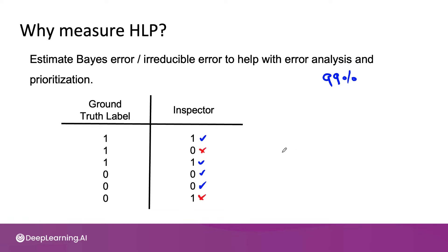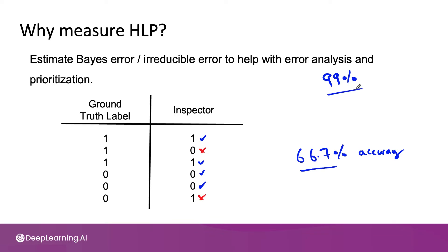And so human level performance is 66.7%. This would let you go back to the business owner and say, look, even your inspector is only 66.7% accurate. How can you expect me to get 99% accuracy? So HLP is useful for establishing a baseline in terms of what might be possible.